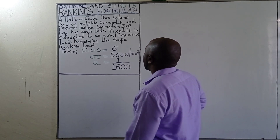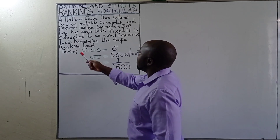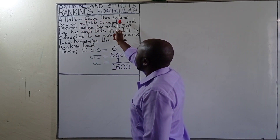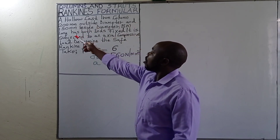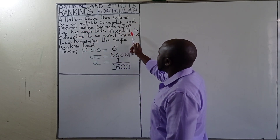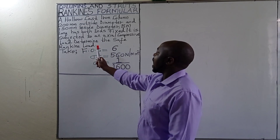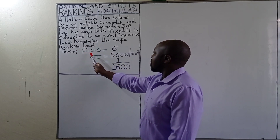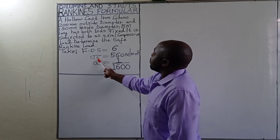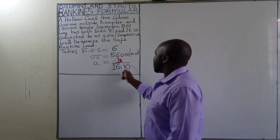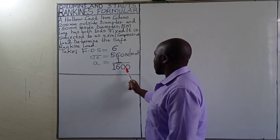Today we are going to apply the Rankine formula to solve the problem: a hollow circular column, 200 mm outside diameter and 150 mm inside diameter, 8 m long, has both ends fixed. It is subjected to an axial compressive load. Determine the safe Rankine load. Take the factor of safety as 6, the ultimate crushing stress as 560 newtons per square millimeter, and a constant A of 1 over 1600.